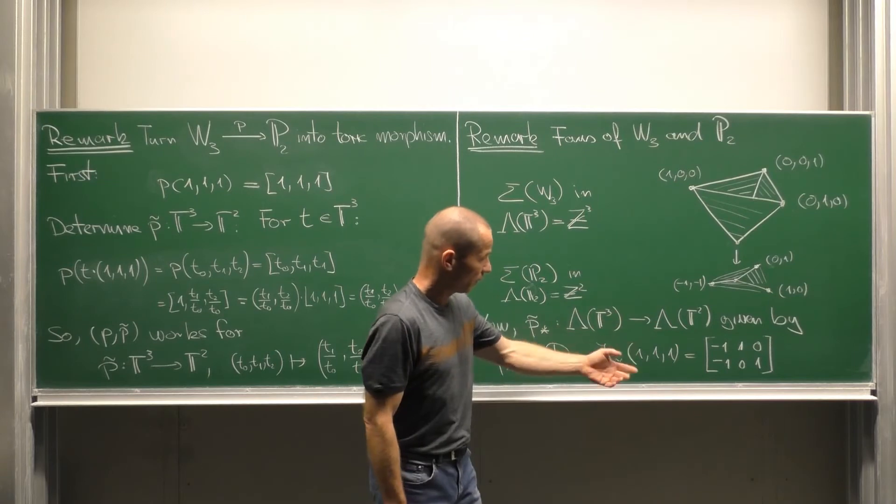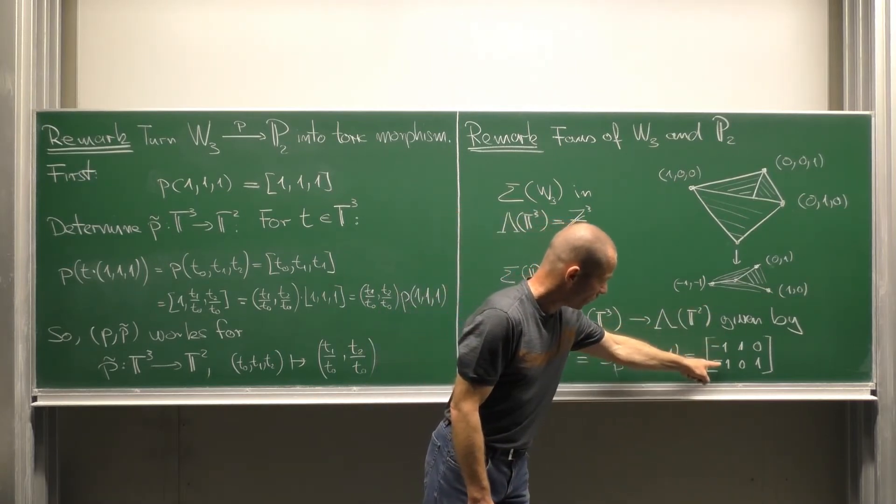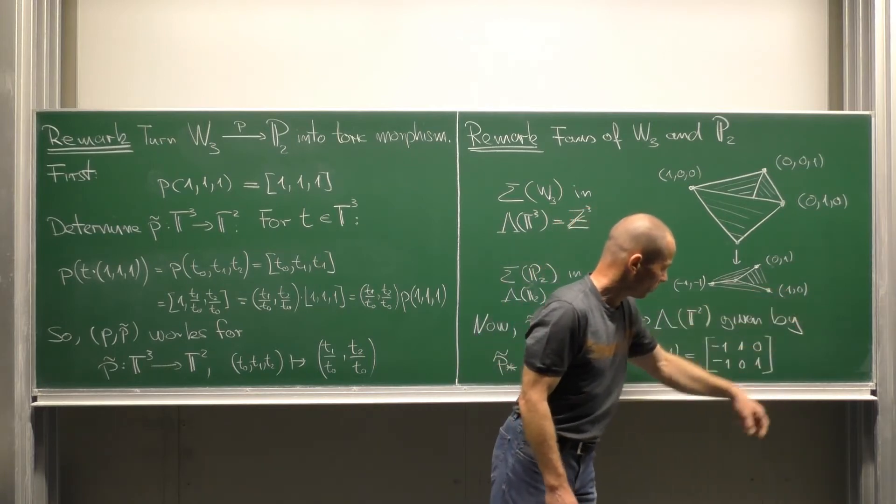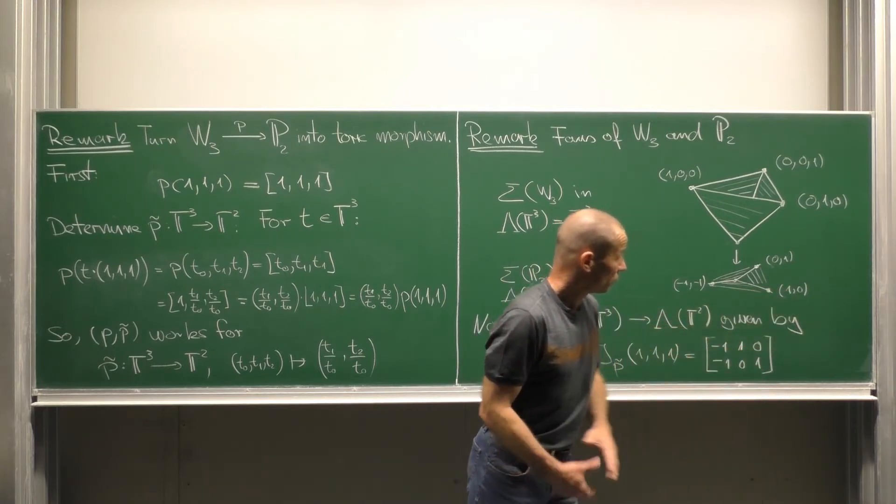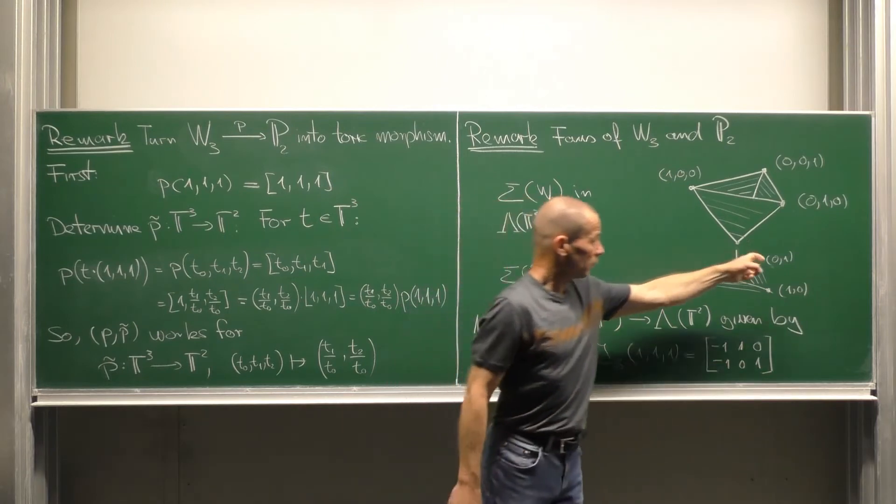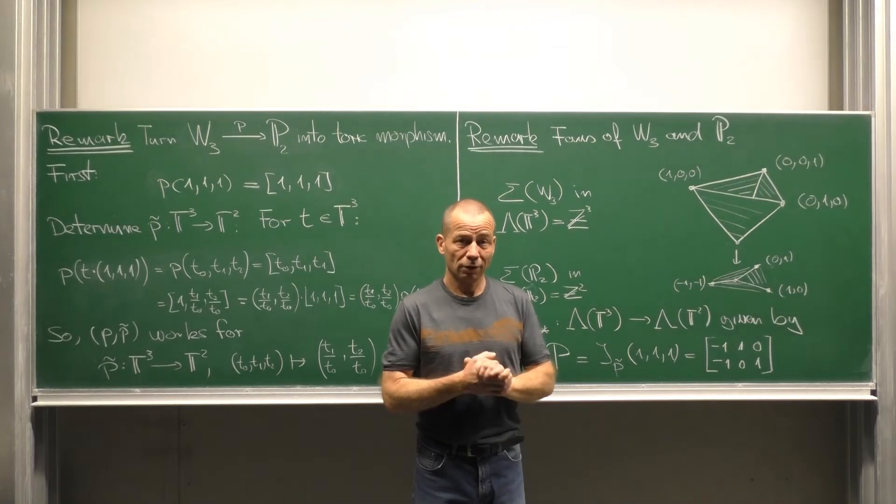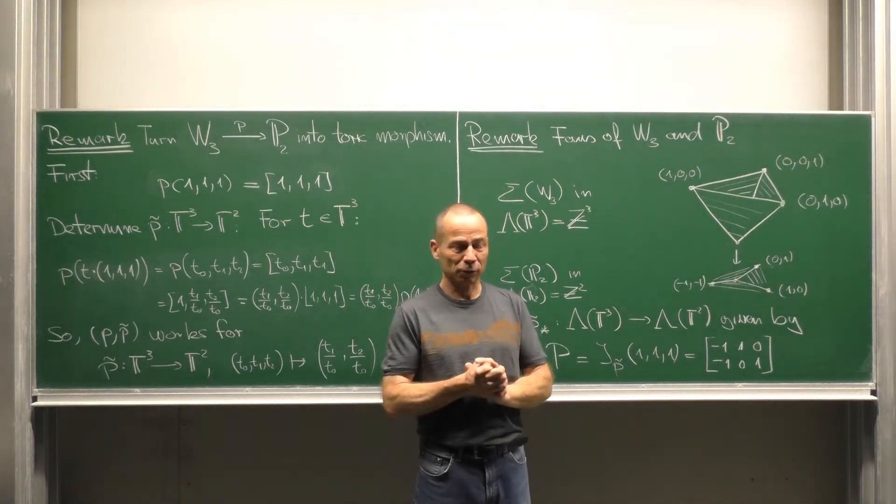And the result is the matrix with first column (-1,-1), so this vector, second column (1,0), so this vector, and third column is just that vector (0,1). So the map of fans indeed looks like as we expected.